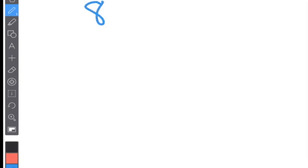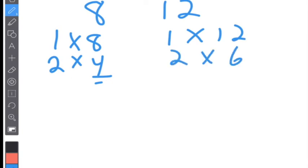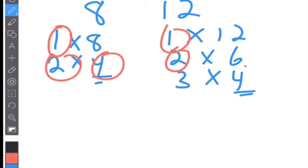Common factors — make sure you know how to find common factors between two numbers. If I have eight and twelve, list out all the factors. For eight: one times eight, two times four — can three go in? No. Can four go in? Yes, but you already did it, so you're done. Factors of eight are one, two, four, and eight. For twelve: one times twelve, two times six, three times four — can four go in? Yes, but you already did it. So the common factors are one, two, and four.